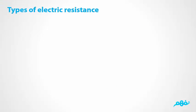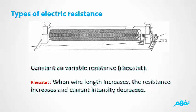Types of electric resistance: constant (fixed) resistance and variable resistance (rheostats). The sliding rheostat is a resistance which can change in order to control the current and potential difference in different parts of the circuit. Its structure consists of a metal wire of high resistance wrapped around a cylinder made of an insulating substance such as porcelain, and a thin copper rod with a slider touching the wire that can slide along the full length of the cylinder. By sliding the flexible sheet on the wire, you control the length of wire entering the circuit and the current passing through it. If we increase the length of the wire, the resistance increases and the current intensity decreases, and vice versa.